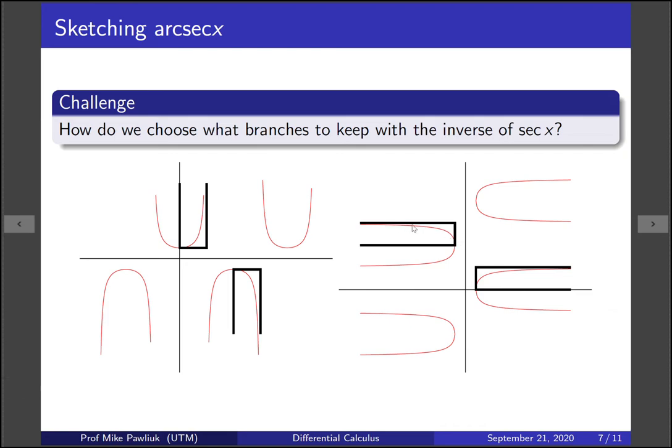But we could also choose this one. So this one would be nice because it's sort of more round, it's more like the square root function. But this one is also nice because it's closer to the x-axis. So which one did you choose?